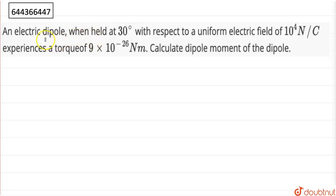Hello, so the question here is an electric dipole held at 30 degrees with respect to uniform electric field of 10^4 N per coulomb experiences a torque of 9×10^(-26). Calculate the dipole moment of the dipole.